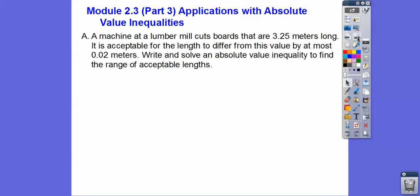A machine at a lumber mill cuts boards that are 3.25 meters long. Are they exactly 3.25 meters long? No. Some are a little bit more, some are a little bit less. It's acceptable for the length to differ from this value by at most two hundredths of a meter. Remember this is tenths, this is hundredths, or 0.02. Write and solve an absolute value inequality to find the range of acceptable lengths.